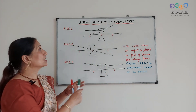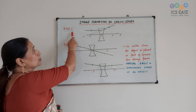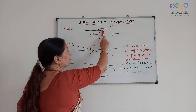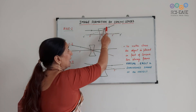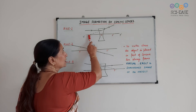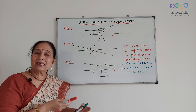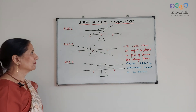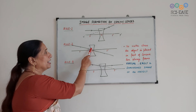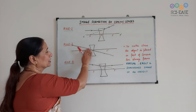For formation of the images by the concave lenses, again three rules are followed. The first rule is when a ray of light parallel to the principal axis, after refraction it will go in this direction and it appears to come from the focus. This is the diverging lens. The second rule is when a ray of light passes through the optical center, it will go undeviated — it will go in this path without any deviation.